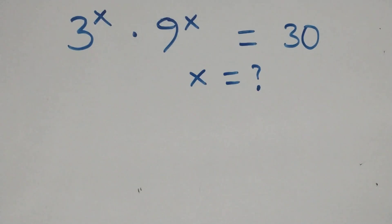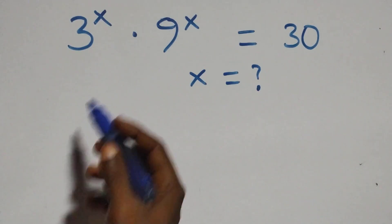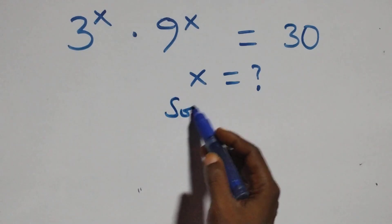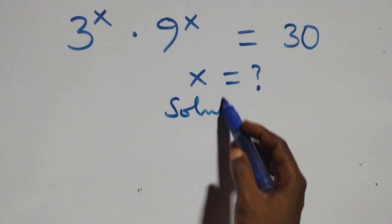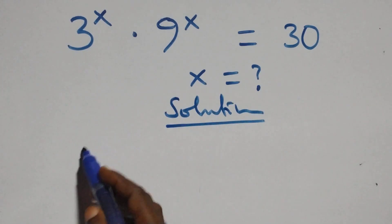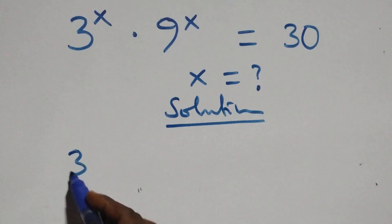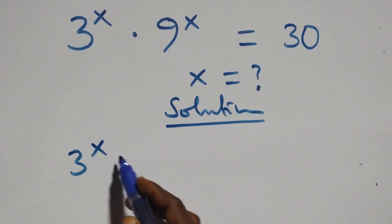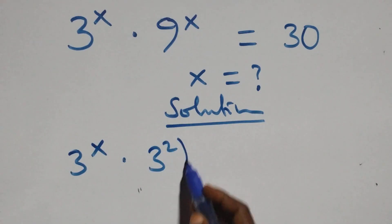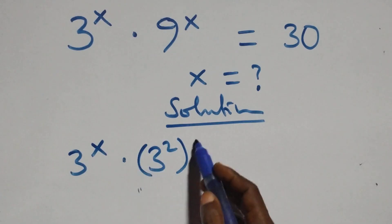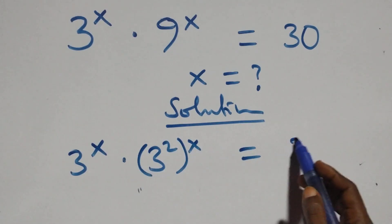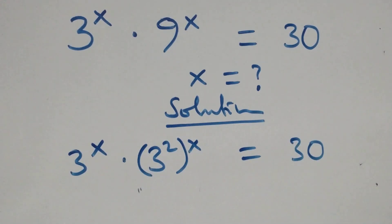Hello, you are welcome. How to solve this nice exponential equation. What we have here, we can write this as 3 raised to power x times 3 squared raised to power x, which equals 30.